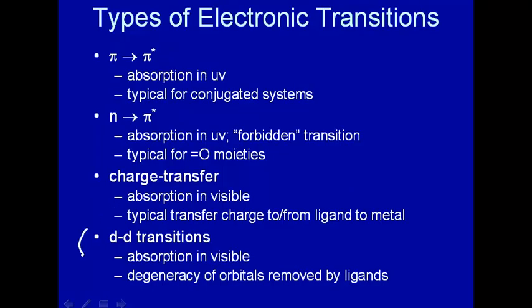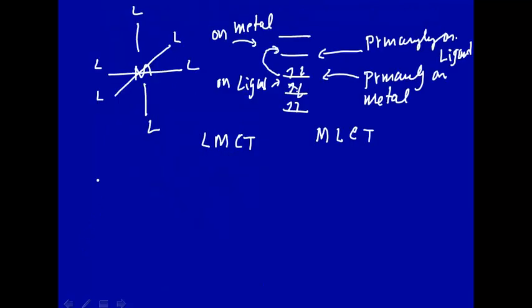And finally, let's look at d-d transitions. There are two ways to look at this. One is by what's called crystal field theory. So in this case, you have your d orbitals in the transition metal. Again, this is transition metal. And these are atomic orbitals.